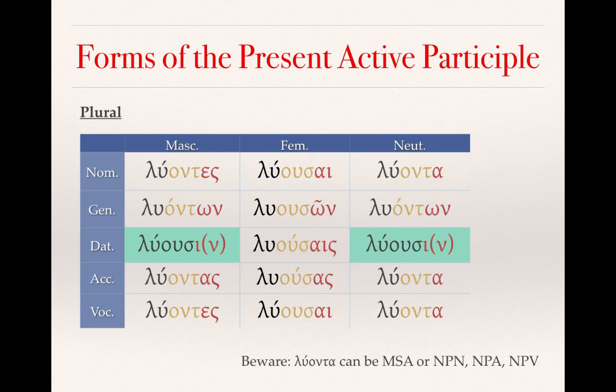Please be aware, however, that luonta can be either masculine singular accusative, as we saw in the last chart, or it can be neuter plural nominative, neuter plural accusative, or neuter plural vocative — and only the context will tell you which form it is.